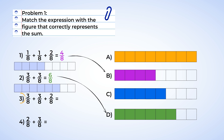Next is number three. These are bigger fractions, but we're going to use the same strategy as the first two equations. We're going to start by shading in three sections to represent three-eighths, and now add in three more sections for the next three-eighths, and finally two sections for two-eighths. And we have a total of eight sections filled in. So three-eighths plus three-eighths plus two-eighths is eight-eighths, or one whole. And that matches with letter A.